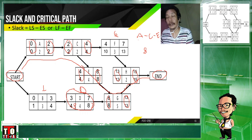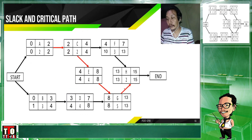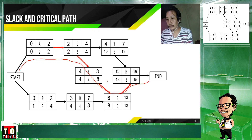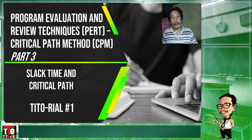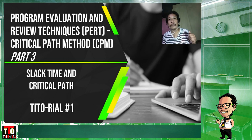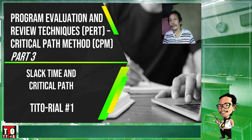It is one pathway. Notice that it's a single pathway of all critical activities going to the end. That's it. So that concludes Part 1 of our PERT CPM series, because there are many other activities we still need to consider for PERT CPM.